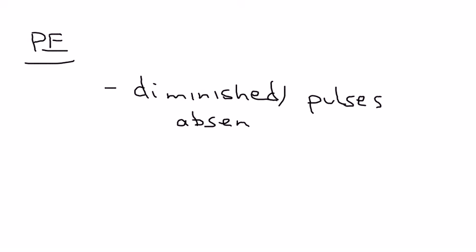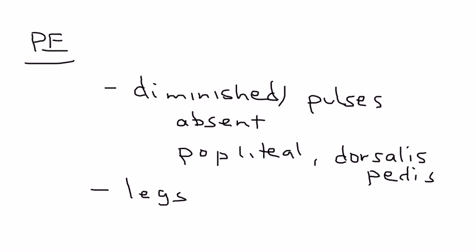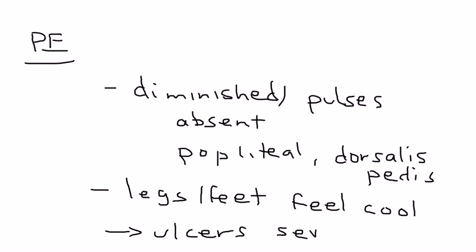In addition to the symptoms, there are other things that you can notice before you do any diagnostic testing. On physical exam, you can definitely palpate for diminished pulses. The pulses may be diminished or in severe cases even absent. You can palpate the popliteal area or the dorsalis pedis pulse to feel for diminished pulses, which is a sign of impaired blood circulation. The legs or the feet may also feel cool because of poor blood circulation. Something that can also happen in severe cases is the development of ulcers.